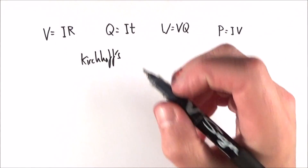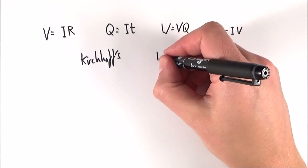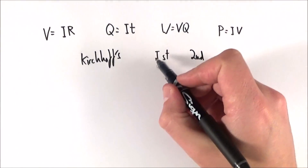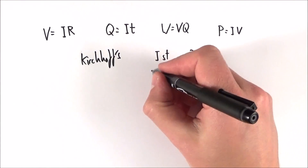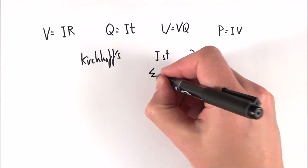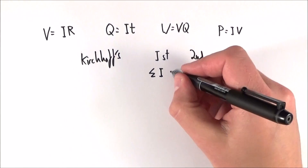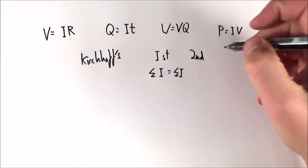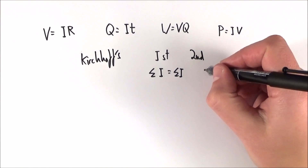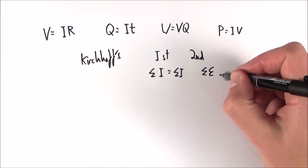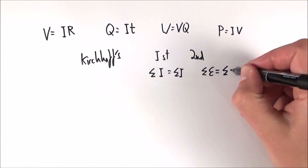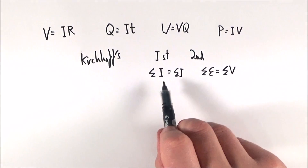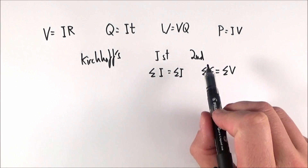You also need to know Kirchhoff's first and second laws. His first law is all to do with current: the sum of the currents going into a junction is equal to the sum of the currents going out. Kirchhoff's second law states that the sum of the EMFs around any closed loop in a circuit is equal to the sum of the potential differences.